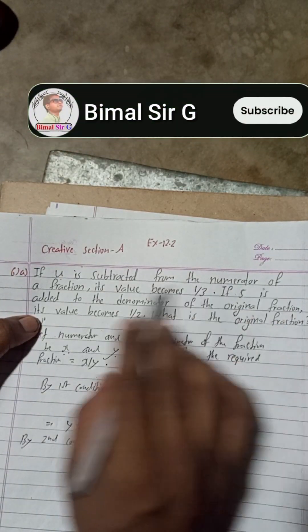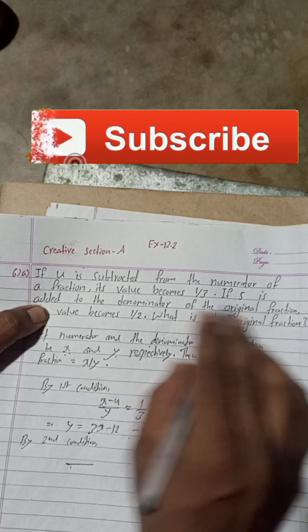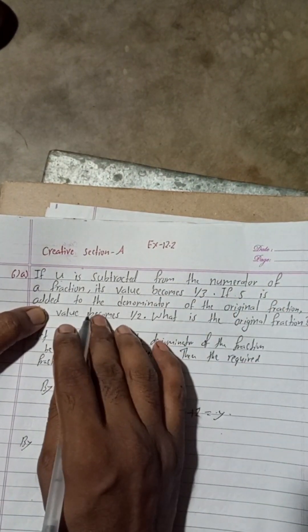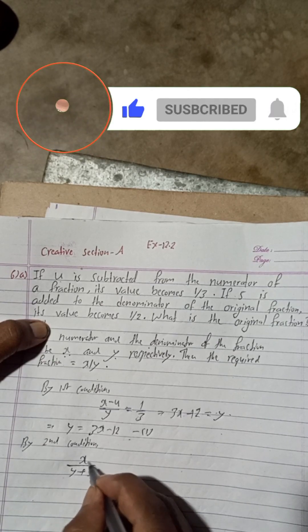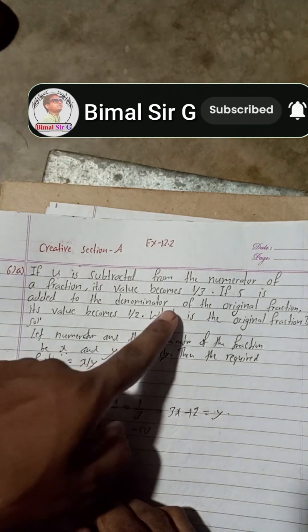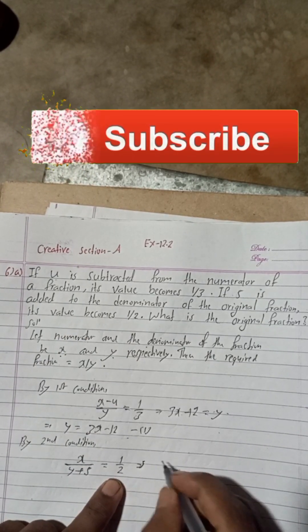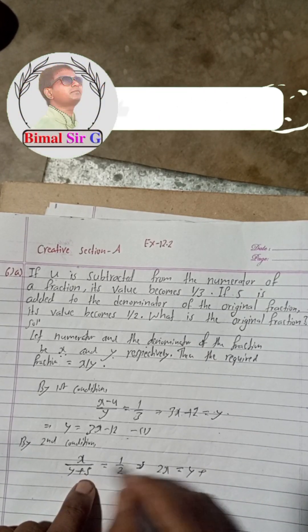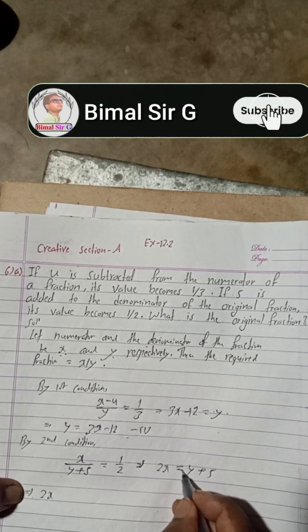By the second condition: if 5 is added to the denominator, the fraction becomes 1/2. The numerator x stays the same, so we write x/(y + 5) = 1/2. Cross-multiplying: 2x = y + 5. This gives 2x − y = 5. This is Equation 2.